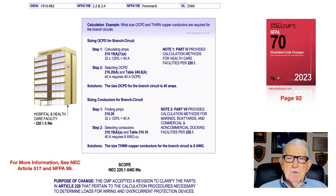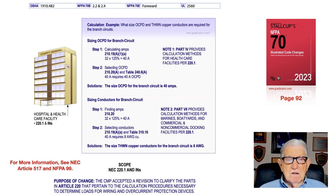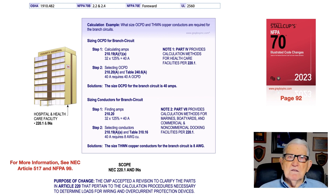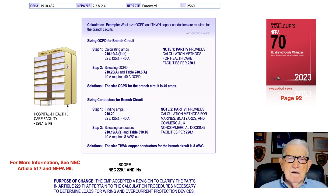Sizing the branch circuits, we go through the same procedure. We take 125 percent of 32 amps, we come up with 40 amps, and then the 40 amps would require us, per 210.19(a)(1), to select from table 310.16 a number 8 conductor based upon that 40-amp calculation. Part 4 note 1 defines calculation methods for health care facilities, and note 2 picks up Part 7, which provides calculation methods for marinas, boat yards, and commercial and non-commercial docking facilities per 220.1.